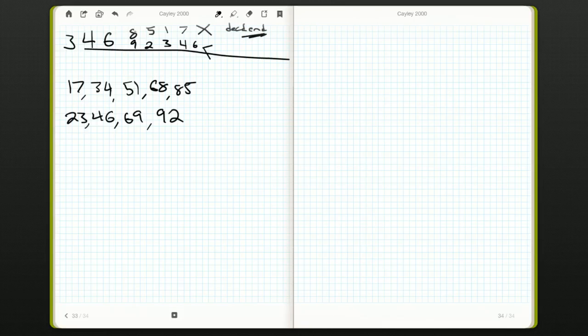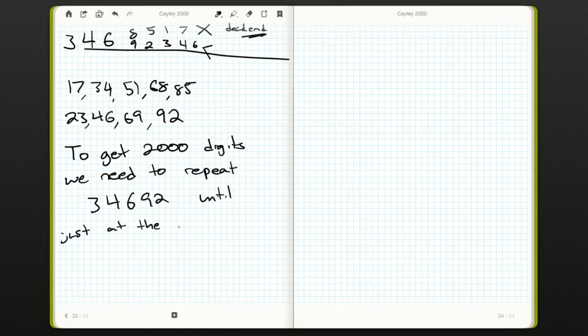So it looks like we sort of get a pattern that repeats. Now, we can't go three, four, six, eight at the very start, because eventually our number will end, and we know it has 2,000 digits. So in order to get to, we need to repeat the three, four, six, nine, two.